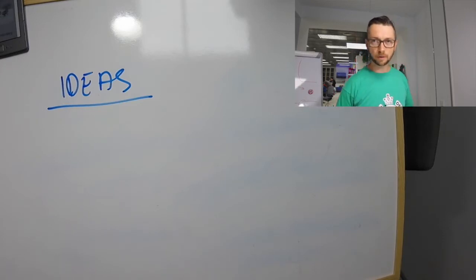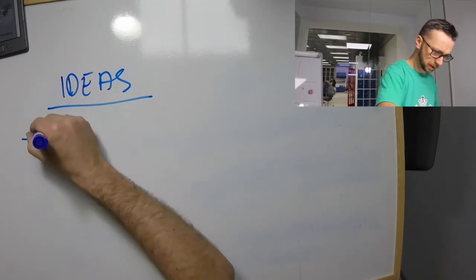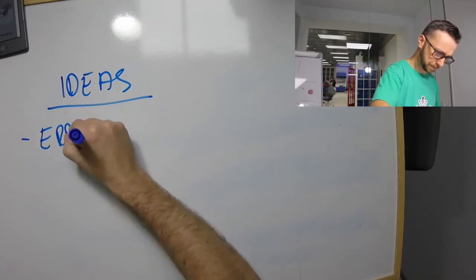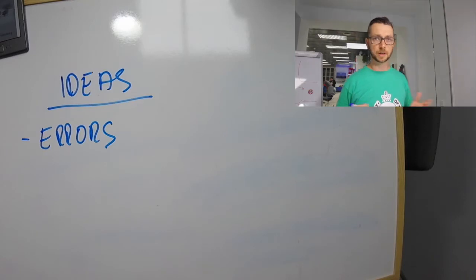Where do ideas come from? Well, ideas can come from three different parts. It can come from errors. This is, you try to do something, it goes wrong, so you learn something out of it.